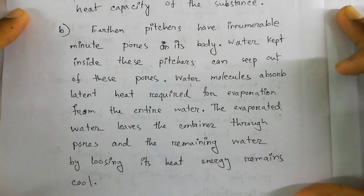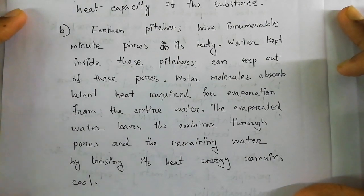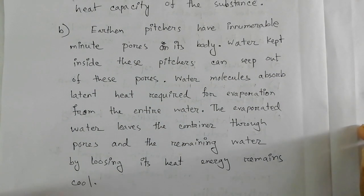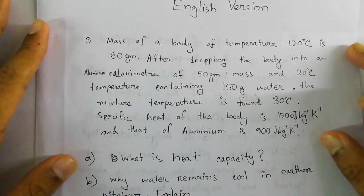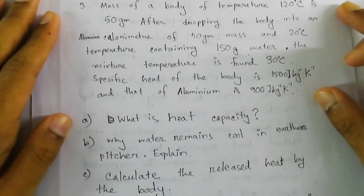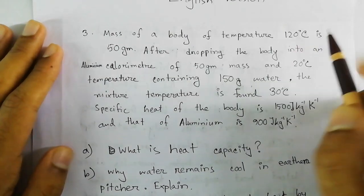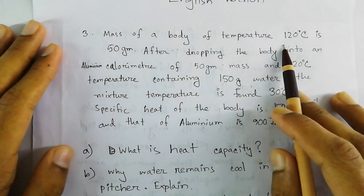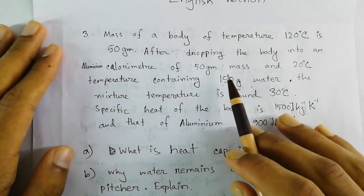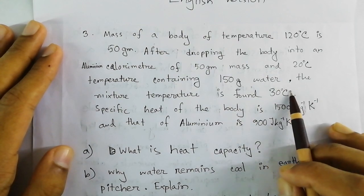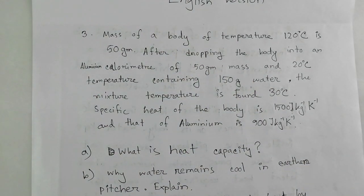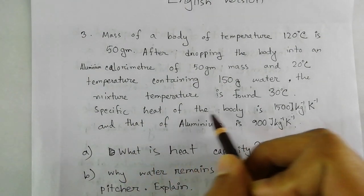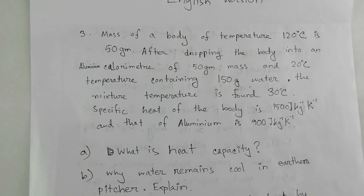You can pause the video to collect the answer. Moving on to the next question — before that, we check the given data again. We have to calculate the heat released by the body mentioned first, which has an initial temperature and a mass. After being put into the calorimeter, it reaches a final temperature. We are also provided with the specific heat of the body.